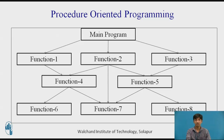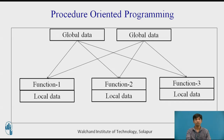We normally use a flowchart to organize these actions and represent the flow of control from one action to another. While we concentrate on the development of functions, very little attention is given to the data being used by various functions. In a multifunctional program, many important data items are placed as global so they may be accessed by all functions, while each function may also have its own local data.